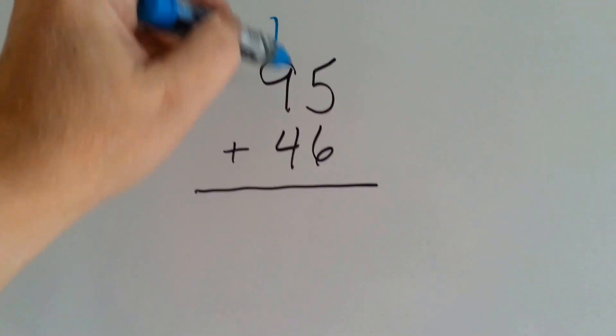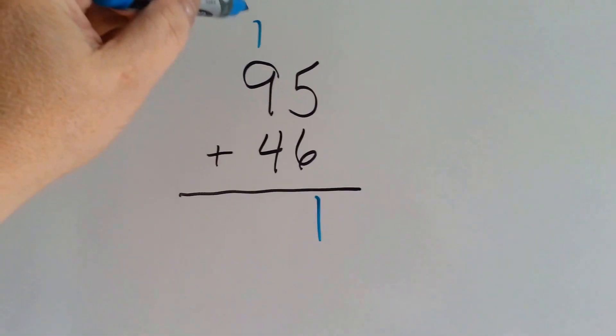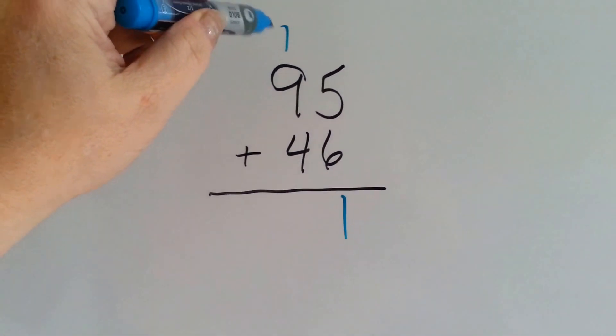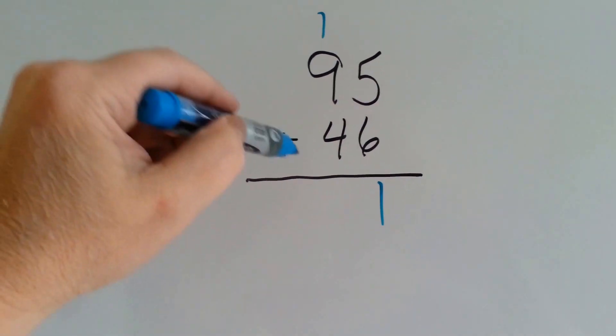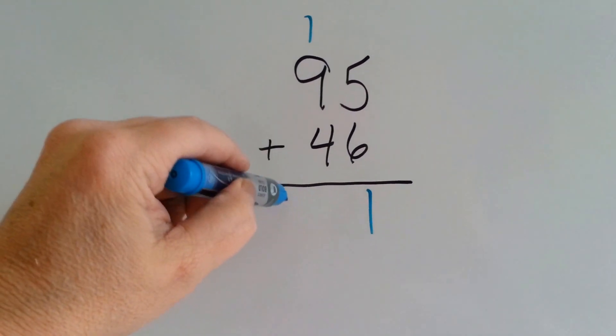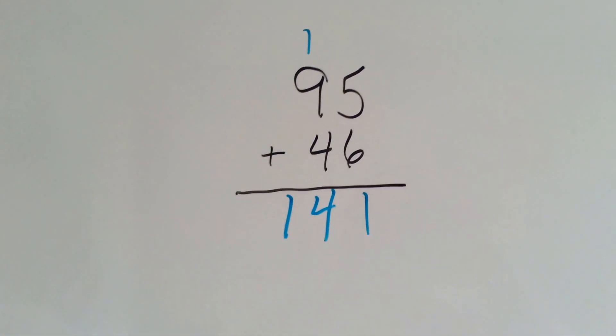5 plus 6 is 11. We carry the 1, 10 and put it in the tens side. 9, 10. 10 and 4 is 14. There you go.